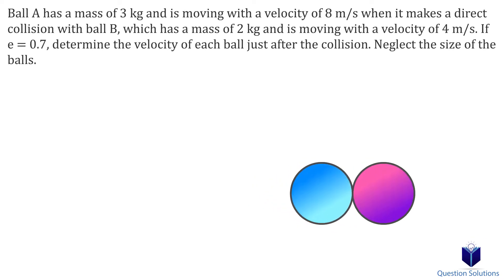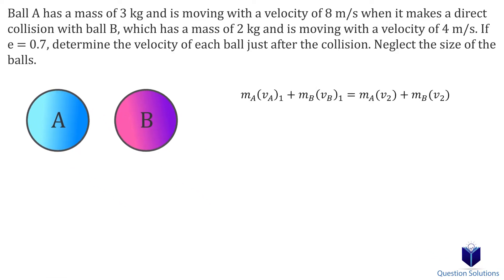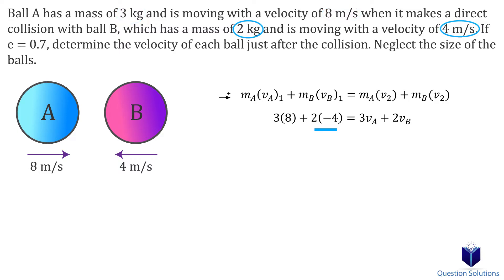In this problem, we need to determine the velocity of each of the balls right after they impact. Let's start off by first writing an equation for the conservation of momentum, and we will assume right to be positive. On the left side, we have the mass of ball A multiplied by its initial velocity, then we add the mass of ball B multiplied by its velocity, which is negative since we picked right to be positive. On the other side, we have the mass of ball A multiplied by its final velocity plus the mass of ball B multiplied by its final velocity. Let's simplify this equation.